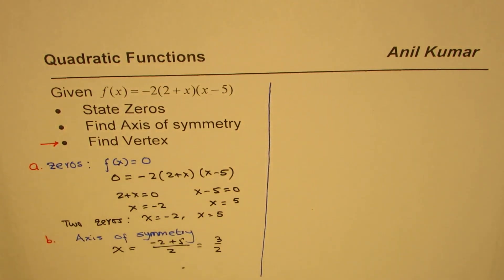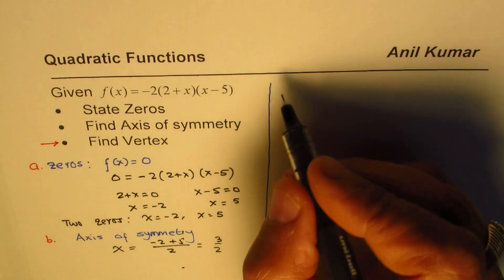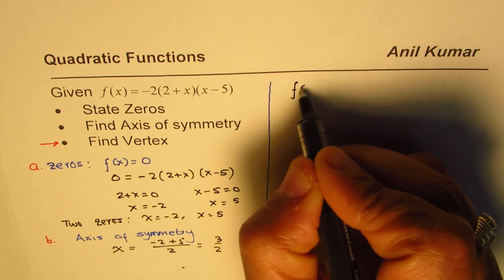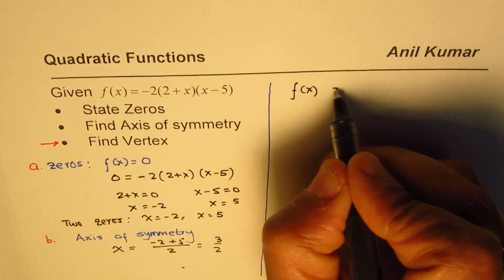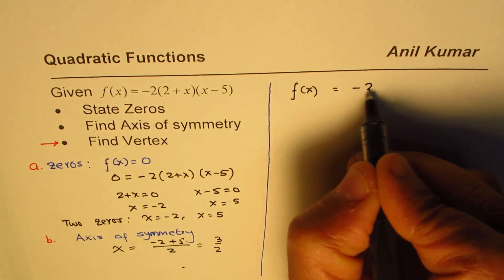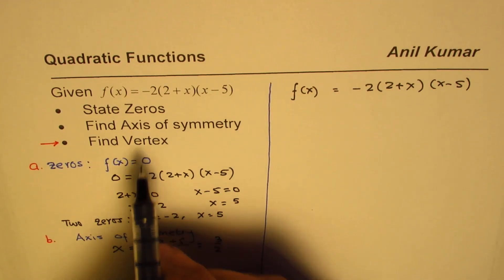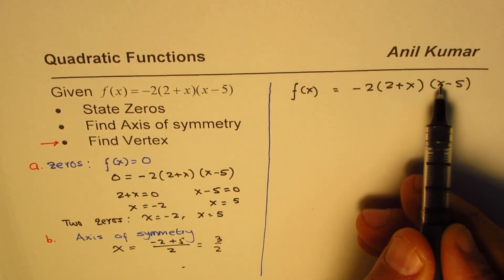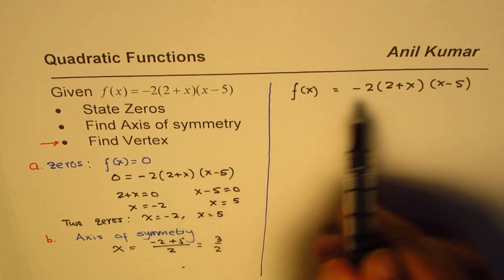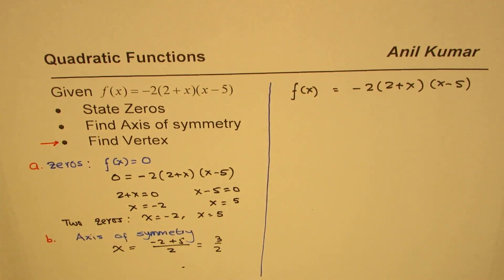We got zeros and axis of symmetry. Now we need to find the vertex. One common mistake I've observed in test papers - not the best way of finding the vertex. The equation given to us is -2(2+x)(x-5). To find vertex, students may expand this and then do completing the squares. That takes a whole page and takes time in a test that is very valuable. Save time when you have axis of symmetry - you can easily find the vertex.